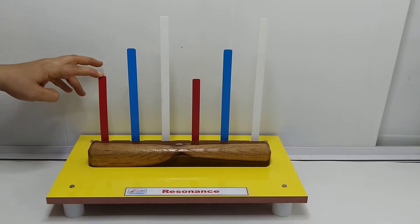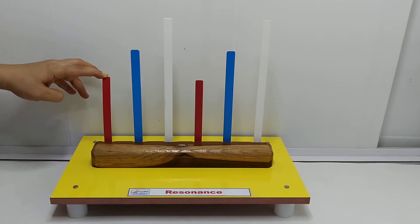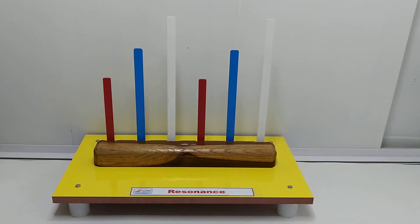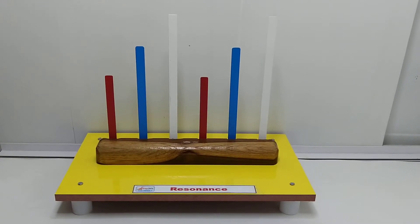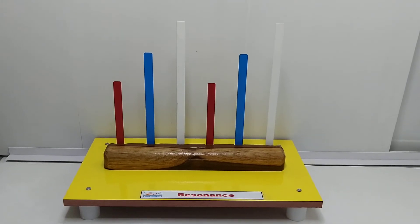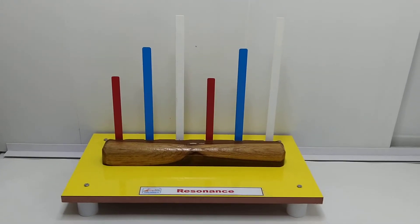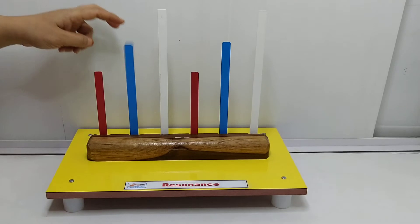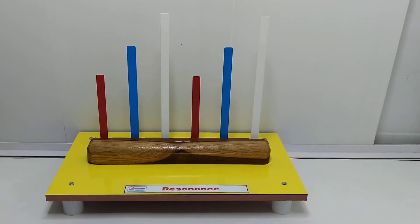and just pluck it. Now the way I am plucking it, can you see all strips are vibrating? But red will vibrate with its maximum amplitude. Similarly, if I pluck the blue, all strips will vibrate but blue will vibrate with its maximum amplitude and the other two will vibrate with very less amplitude.